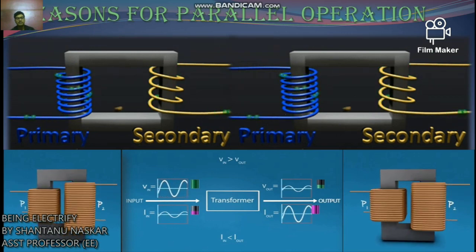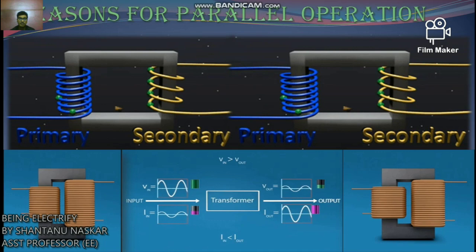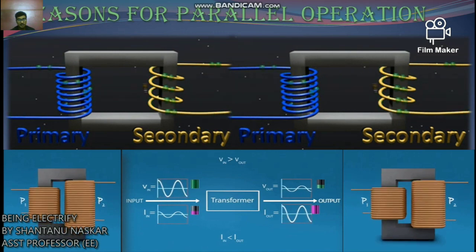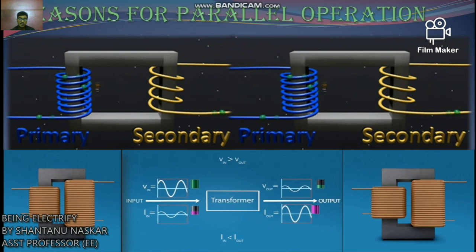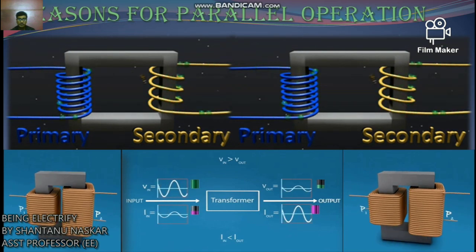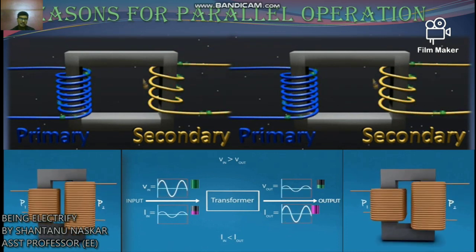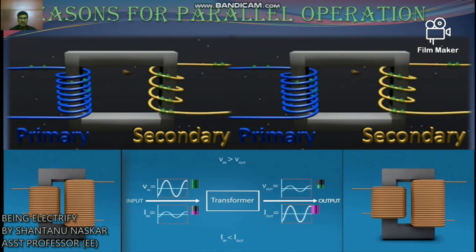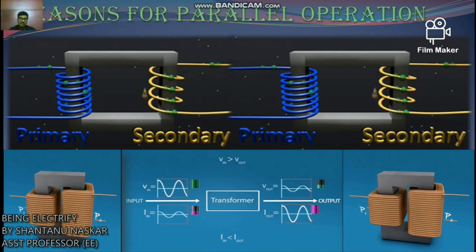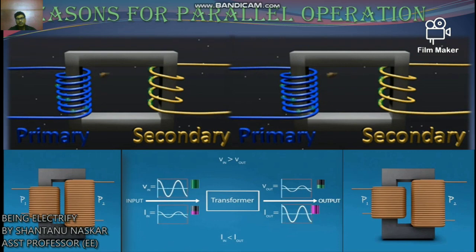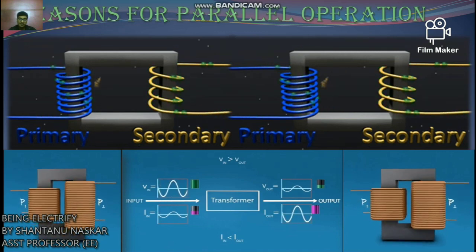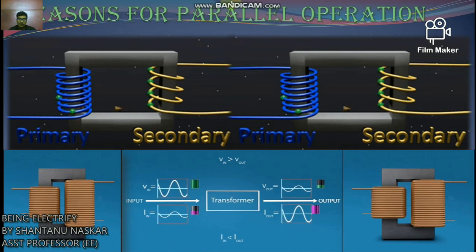In a substation, the total load may be supplied by an appropriate number of standard-size transformers, reducing spare capacity. Parallel connection also allows future expansion of the substation beyond the capacity of already-installed transformers. If any transformer in a parallel system breaks down, there will be no interruption of power to essential services. Similarly, if any transformer is taken out for maintenance and inspection, continuity of supply will not be disturbed.